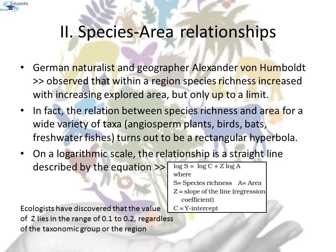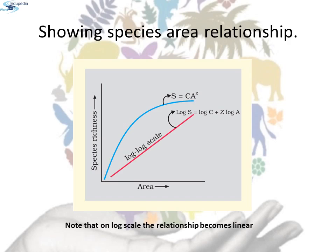Ecologists have discovered that the value of Z (slope of the species-area regression line) lies in the range of 0.1 to 0.2 regardless of the taxonomic group or the region — whether it is plants in Britain, birds in California, or molex in New York State, the slopes are amazingly similar. But if you analyze the species-area relationship among very large areas like entire continents, the slope of the line is much steeper, with a Z value in the range of 0.6 to 1.2. For example, for frugivores (fruit-eating birds and mammals) in tropical forests of different continents, the slope is found to be 1.15. Note that on a log scale, the relationship becomes linear.